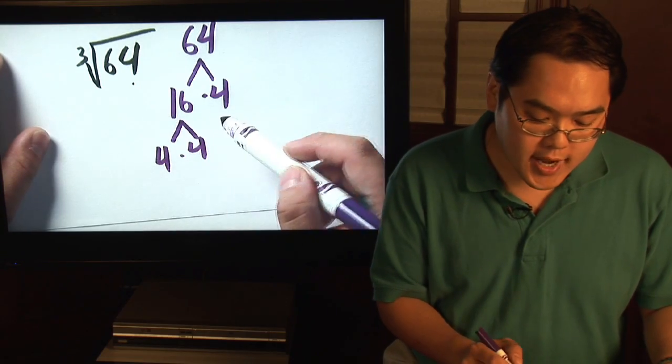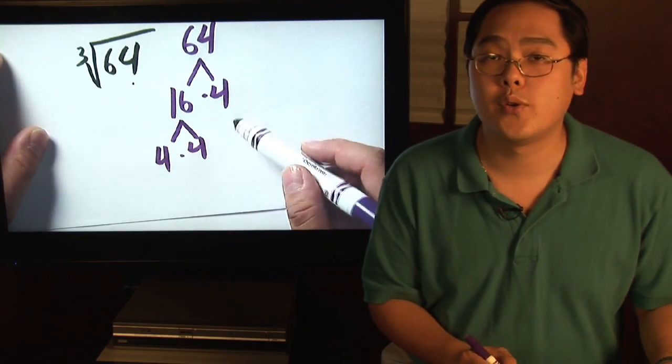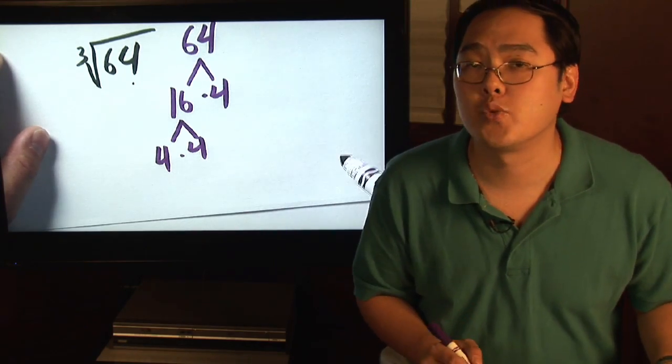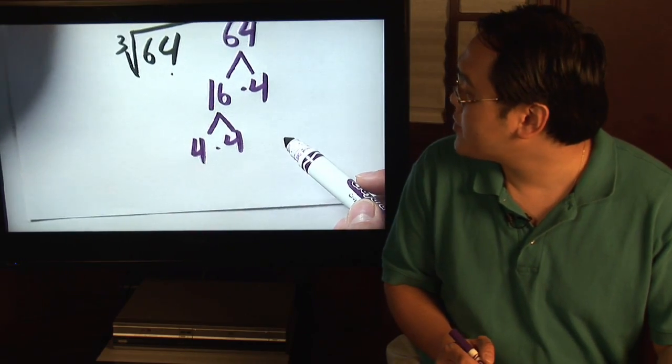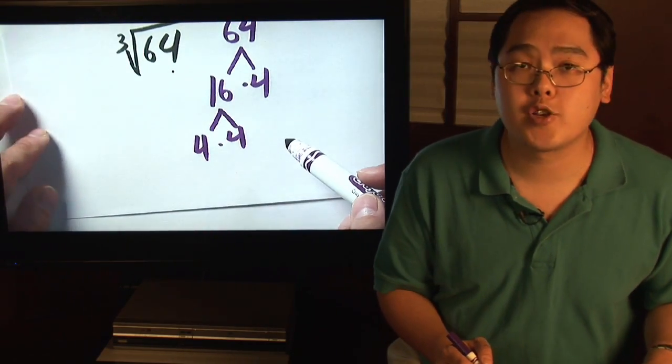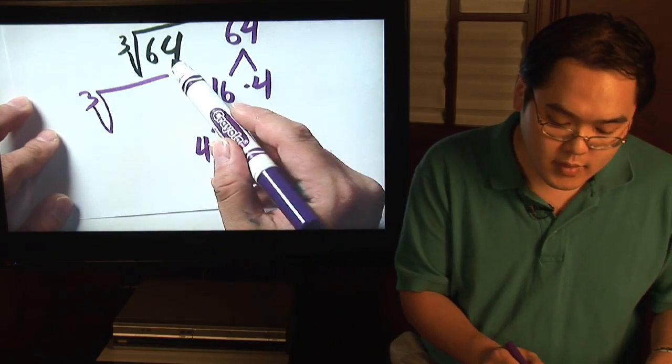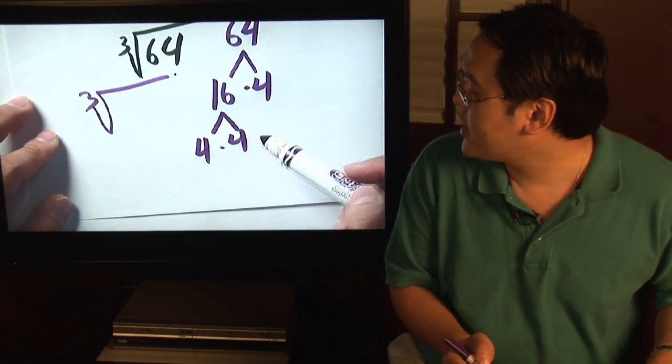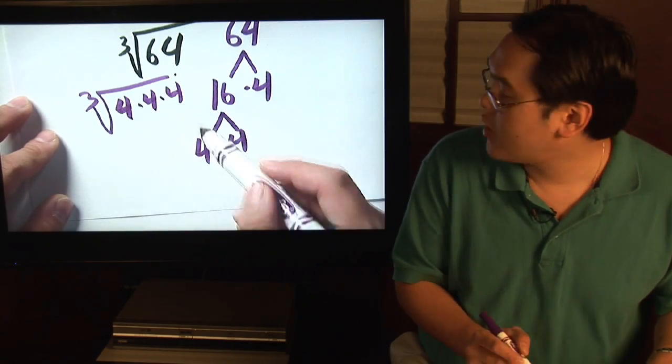For right now, let's think about leaving 64 as 4 times 4 times 4 and here's why. Because you know that 64 can be broken up as 4 times 4 times 4, there's a rule in algebra that says you can break it up as those three numbers multiplied together. So it would be 4 times 4 times 4.